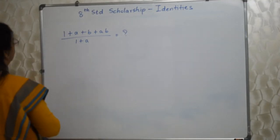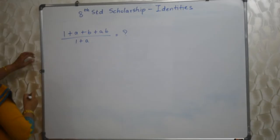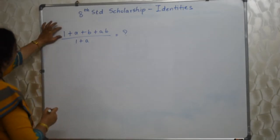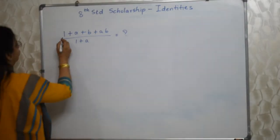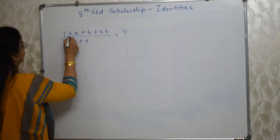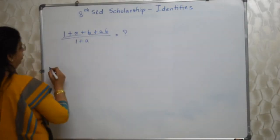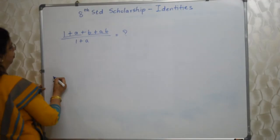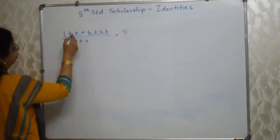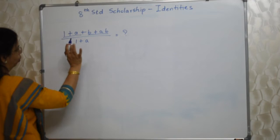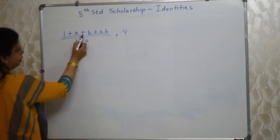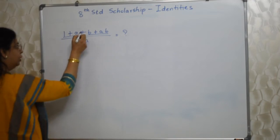See the next sum written on the board. First I need to concentrate on the numerator. Make groups of two: (1 + a) and (b + ab). I cannot cancel 1+a with 1+a directly because there is a plus between them — I can only cancel common factors in multiplication, not addition. Please be careful.